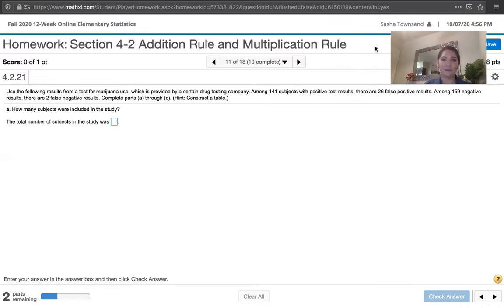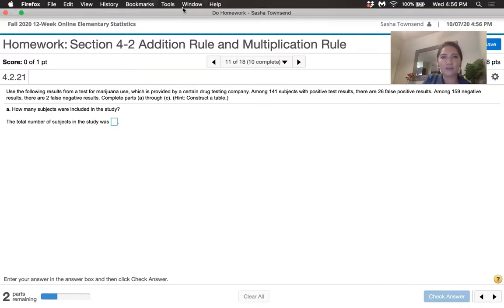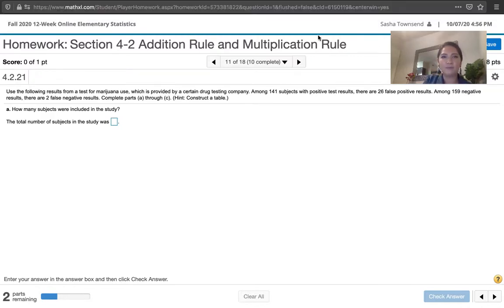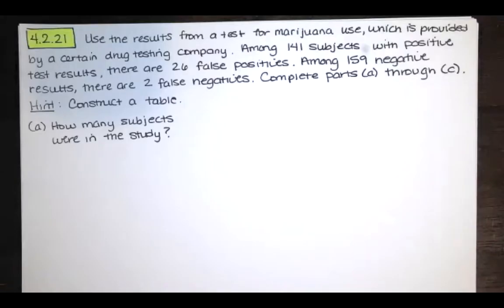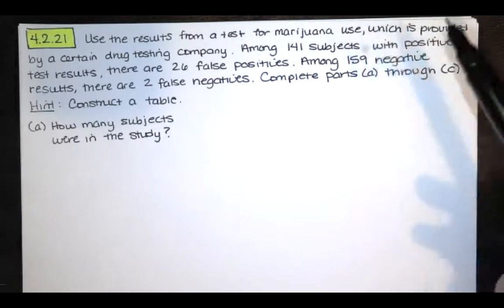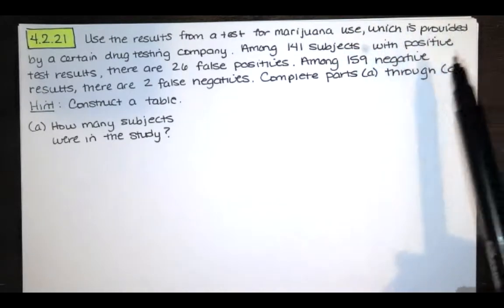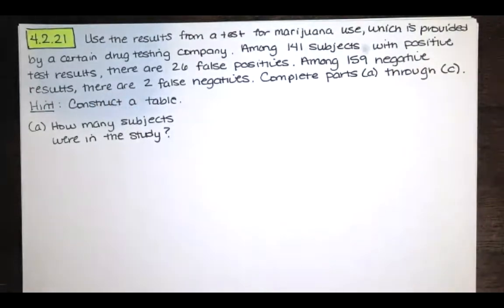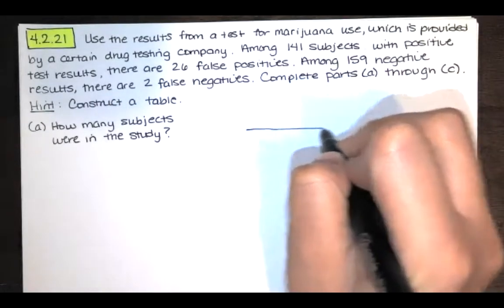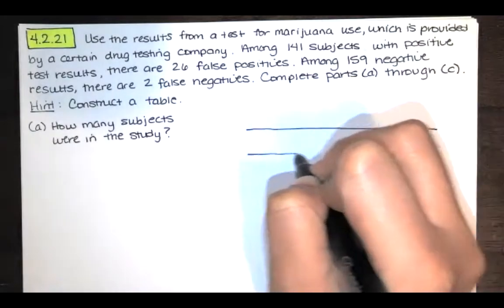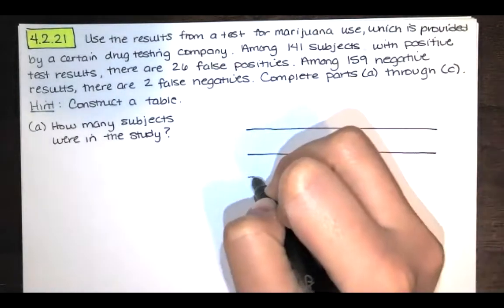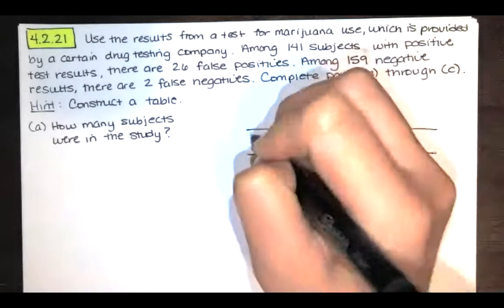So I'm going to construct that table on my piece of paper, so I'll share my paper with you now. All right, so let's do what they suggested. Let's construct that table. So we've got test results for marijuana use, and we have what are referred to as false positives and false negatives.